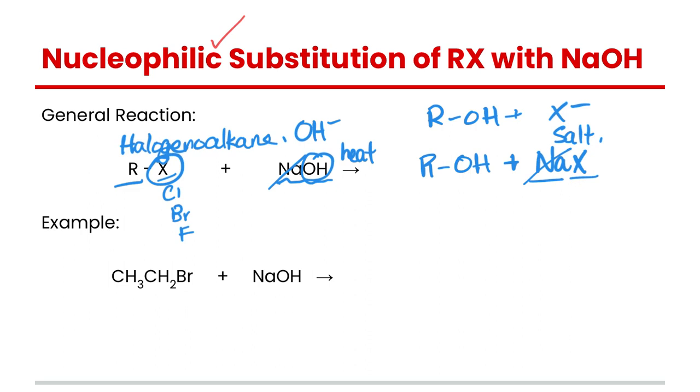For example, if we had bromoethane and we react it with sodium hydroxide with a bit of heat, that's going to create our ethanol and then our other product would be sodium bromide.